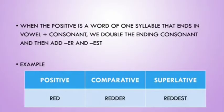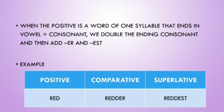The next rule: when the positive is a word of only one syllable that ends in a vowel and a consonant, we double the ending consonant and then add -er and -est. For example, the word 'red' ends with vowel -e plus the consonant -d. To change it into comparative and superlative forms, we double the ending consonant. So the letter -d will be doubled. In the comparative, it becomes r-e-double-d-e-r, so we have doubled the letter -d and added -er to form the comparative degree.